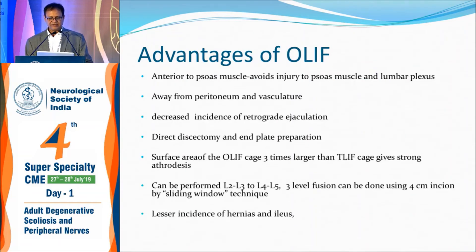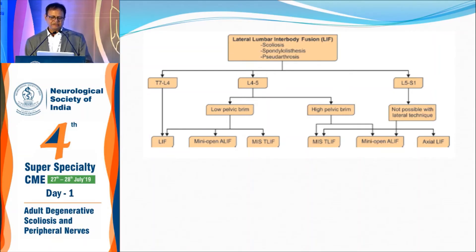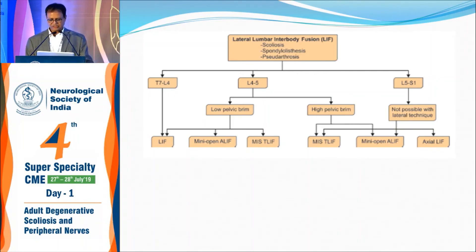The advantages of OLIF over direct approaches include prevention of retrograde ejaculation and less risk of vessel damage. The disadvantage is it can only be done for three levels. For an algorithm: if you have L5-S1, probably the anterior approach is better. If it's L4-5, depending on the height of the iliac crest and where the aorta divides on MRA — if the aorta is divided at a higher level with insufficient space between the vessel and anterior psoas border — then anterior or posterior approach is better. If from L2 to L5, OLIF is the better approach. Above that level, a standard posterior approach is better.